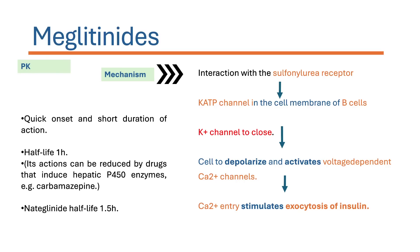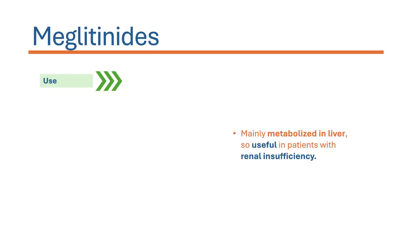Regarding pharmacokinetic parameters, meglitinides are very quick in onset of action and act for a short duration of time. Because of their quick onset, they can be used to reduce postprandial hyperglycemia. Repaglinide has a half-life of one hour; its action can be reduced by drugs that induce hepatic P450 enzymes, like carbamazepine. Nateglinide has a half-life of 1.5 hours.